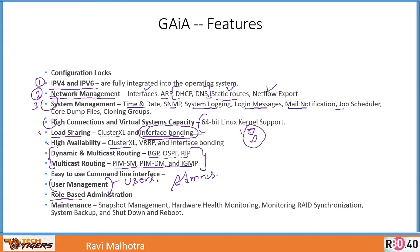Gaia is very light in size - it takes less time to install. Once installed, a reboot is needed. After the reboot you can connect over HTTPS. The moment you connect, it gives you the first-time configuration wizard. After running the wizard you can choose to install a Security Management Server, Security Gateway, or both roles on the same machine. We will do all of this live in a lab in the next video.